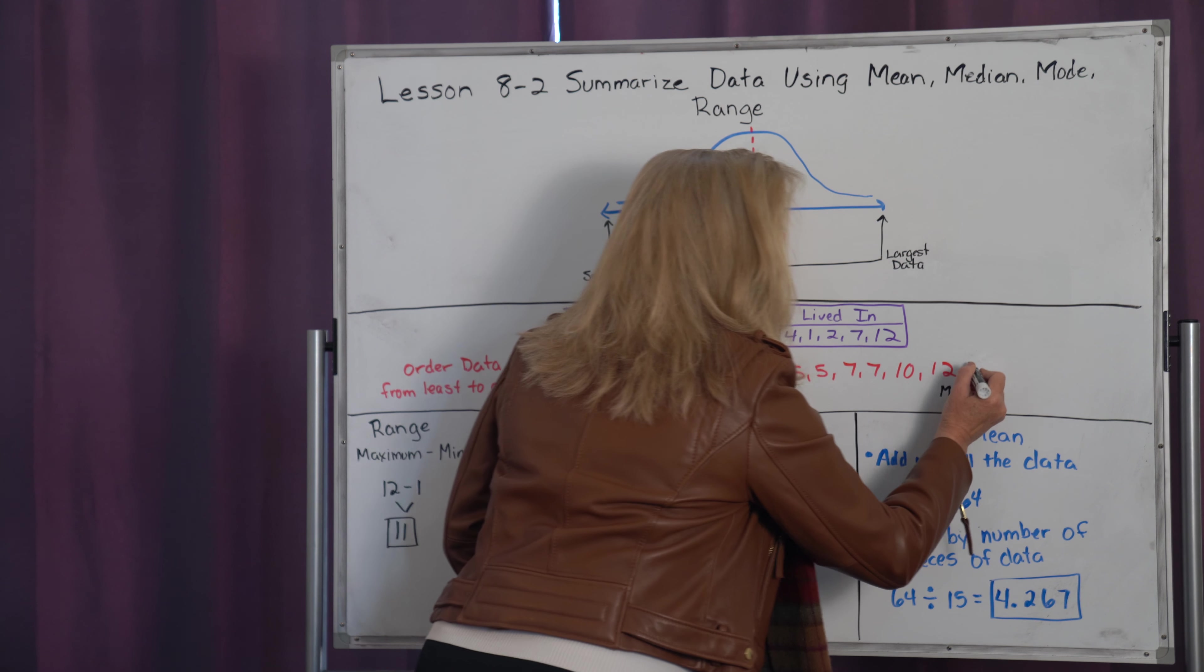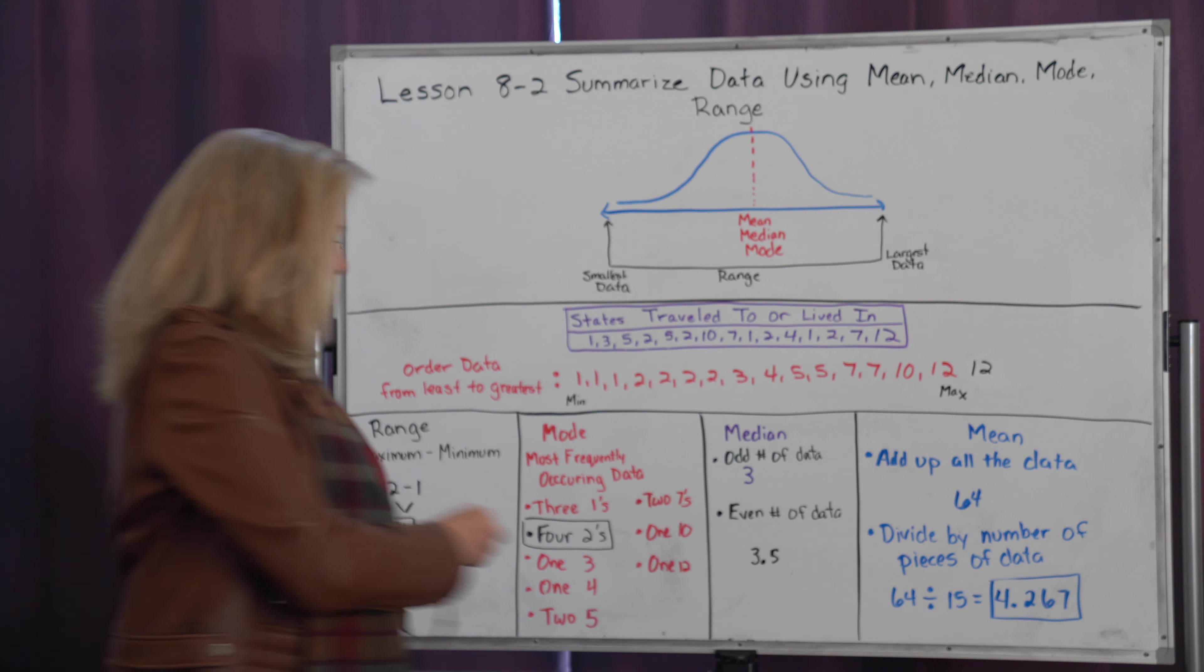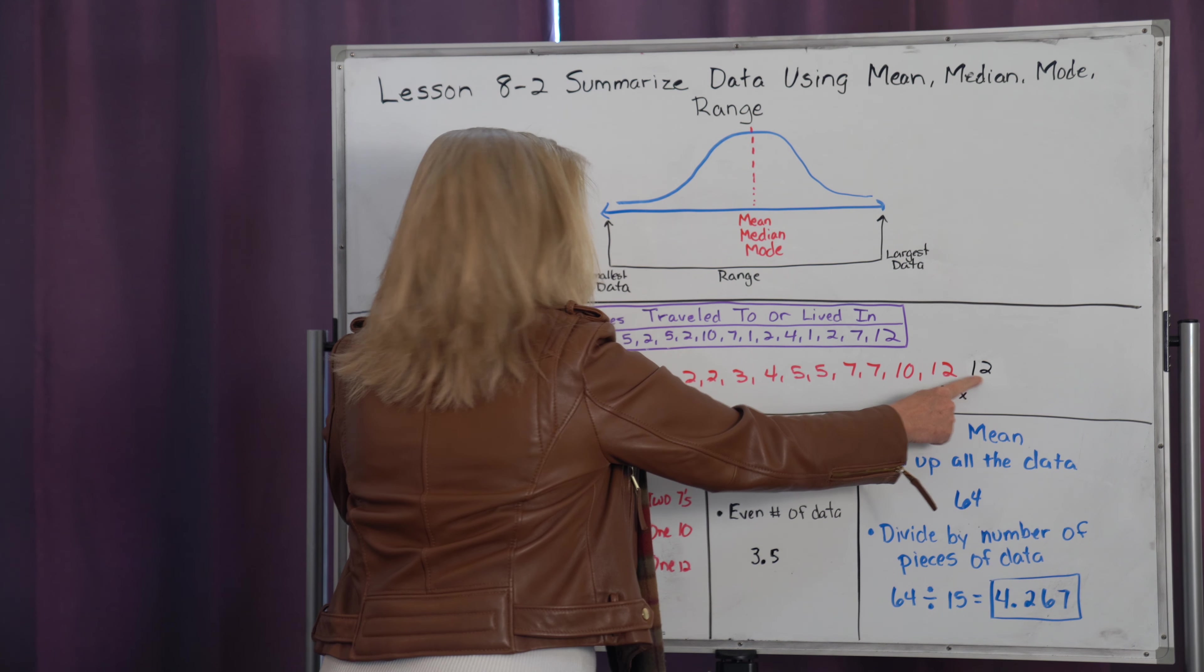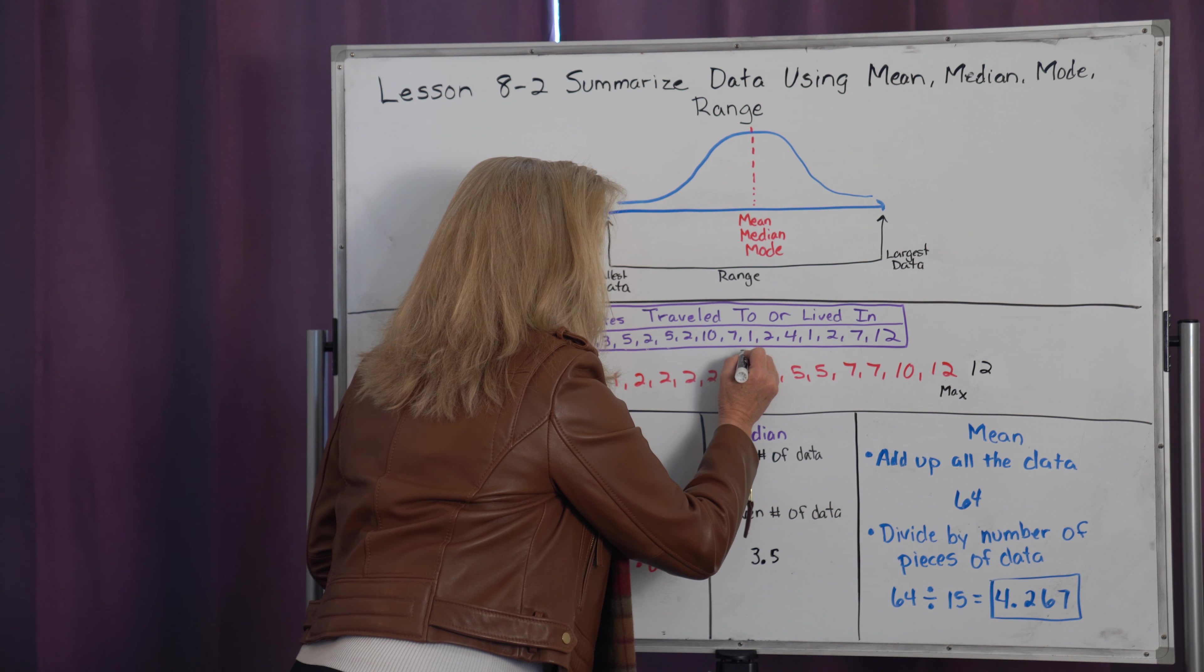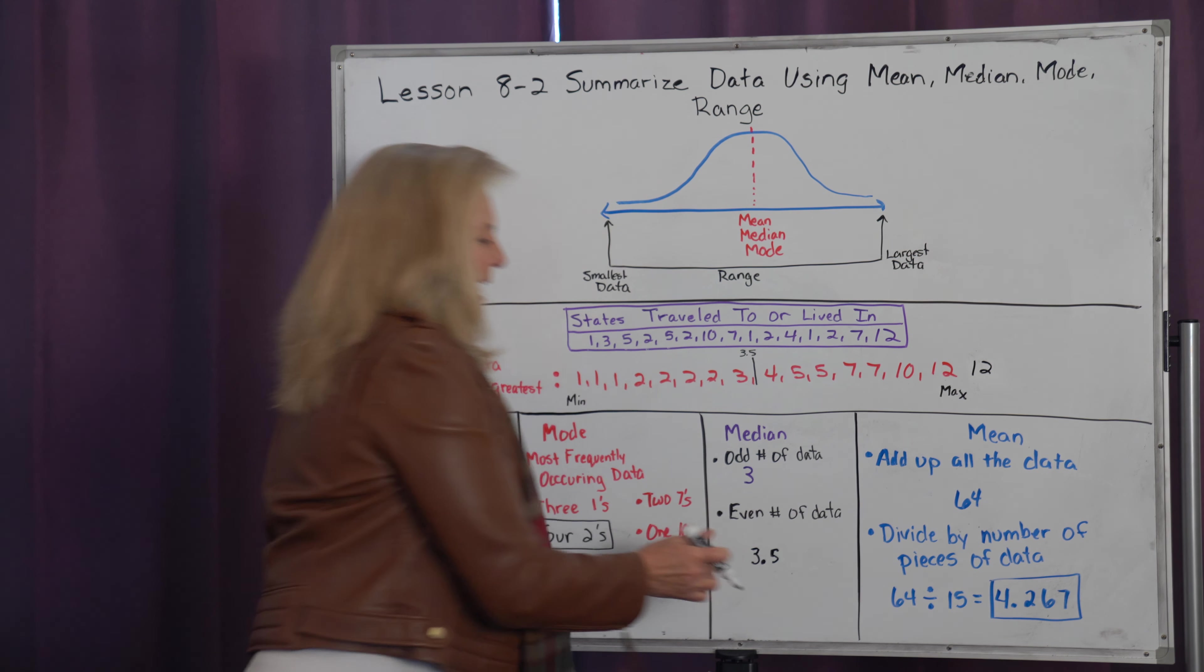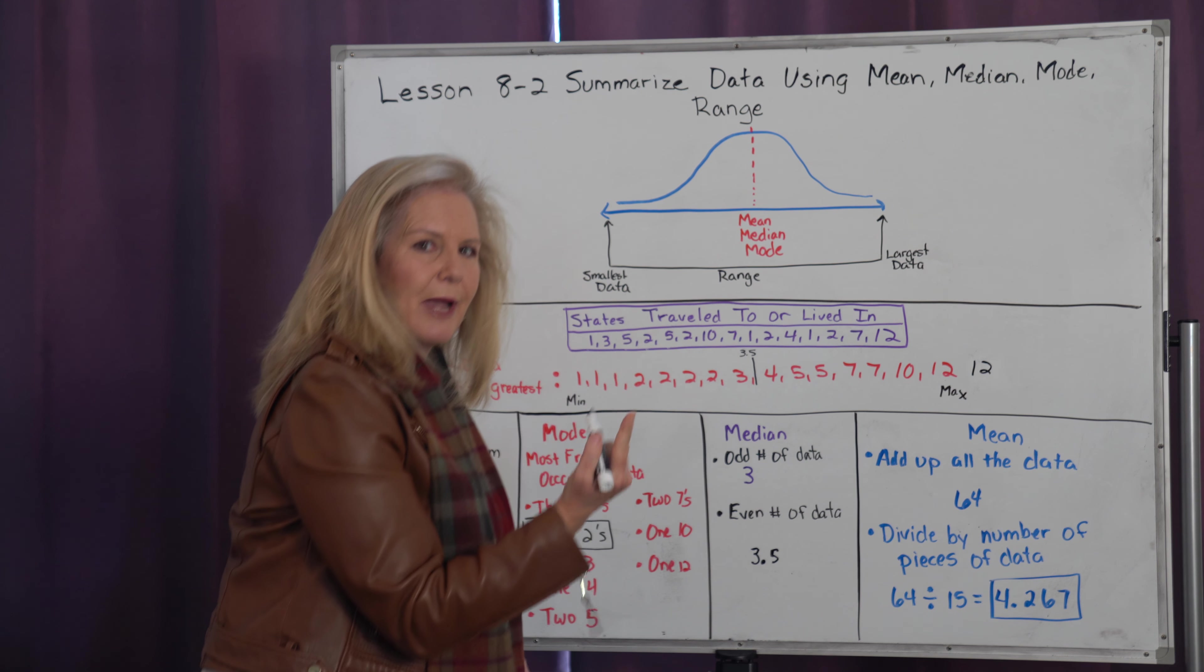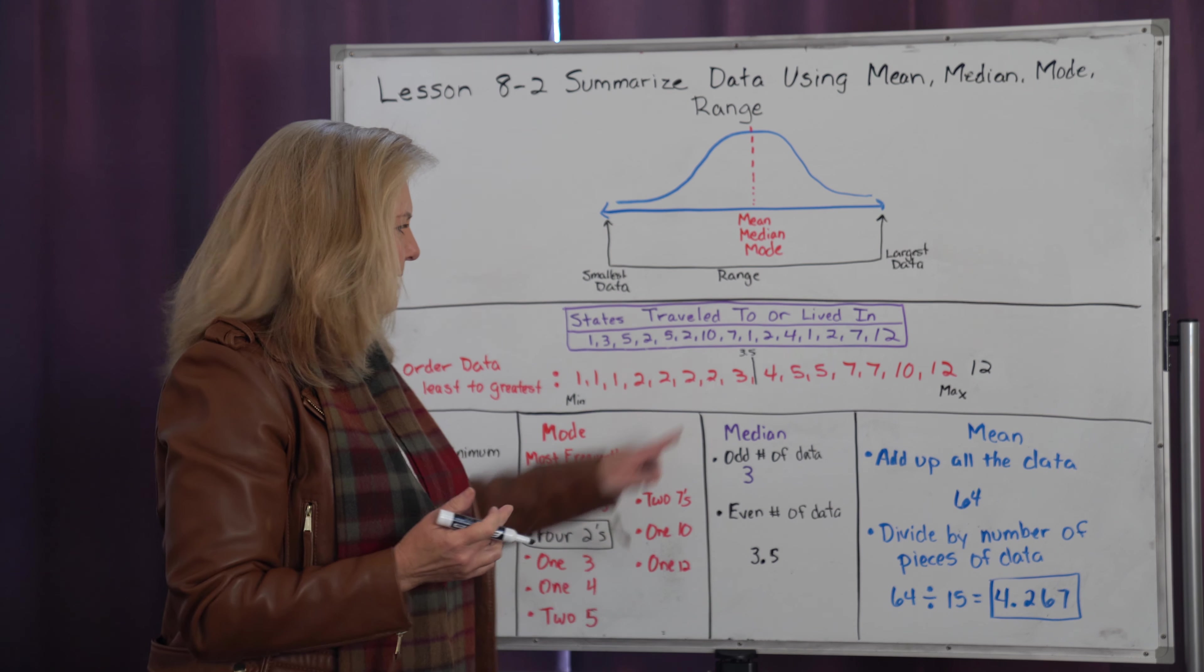For odd numbers of pieces of data, you're going to end up on one number. But let's say I had one more piece of data, and instead of fifteen pieces of data I have sixteen. When I go to the center on that and work my way back in, notice I have two numbers in the center, and I want to go exactly in between those two numbers to get my median, and that would be three and five tenths. For an even piece of data, you're usually going to be between two numbers. For an odd piece of data, it just goes directly to the middle number.